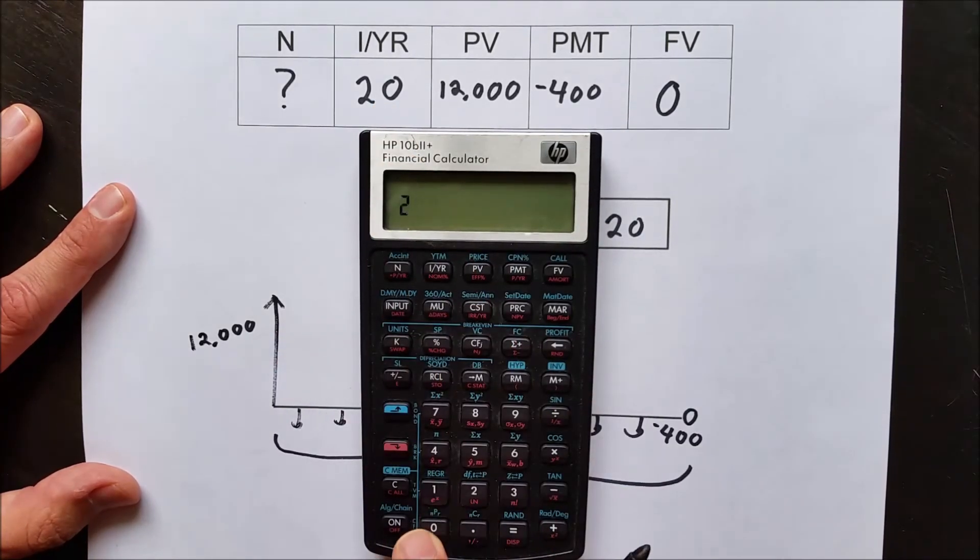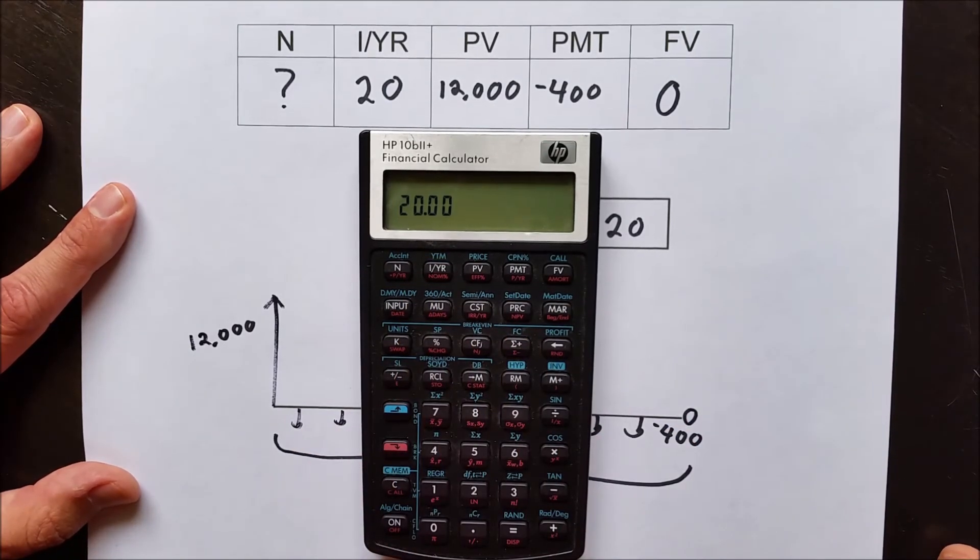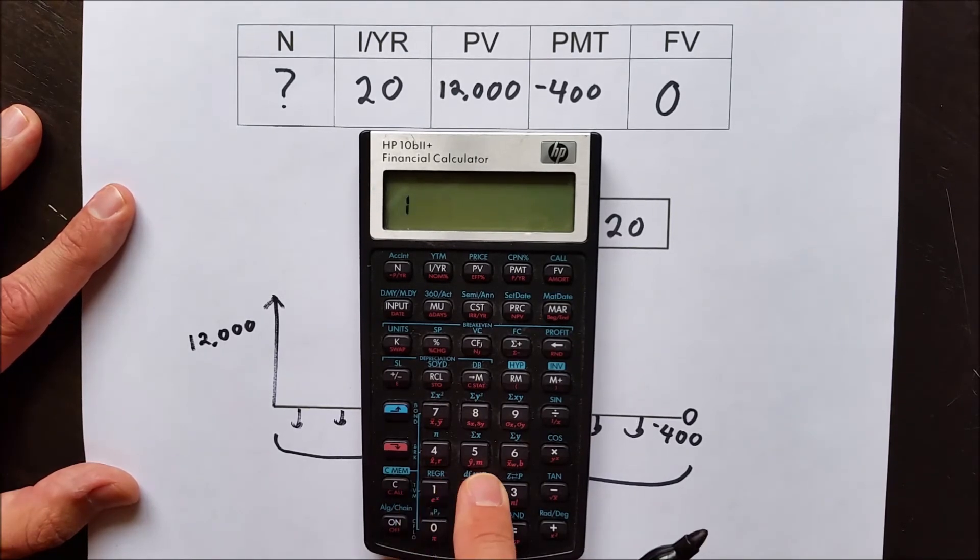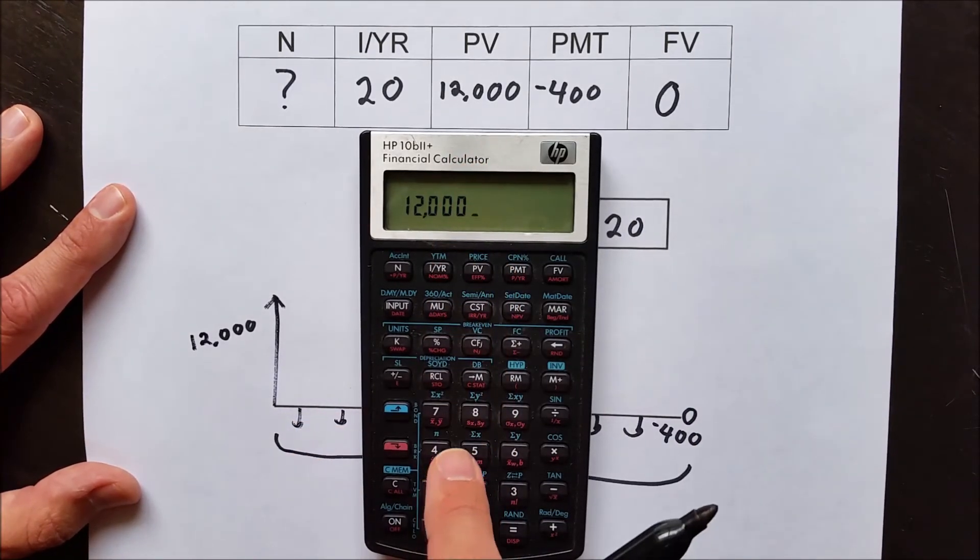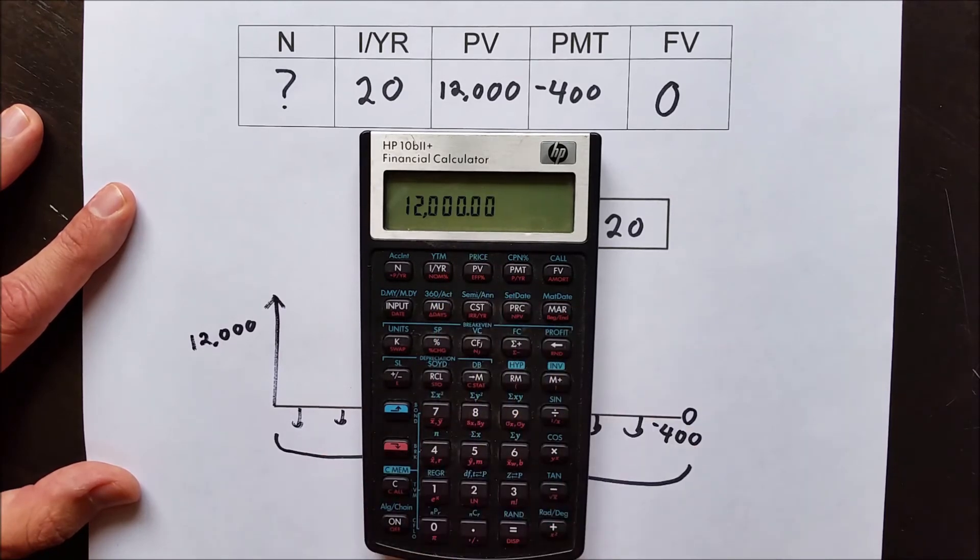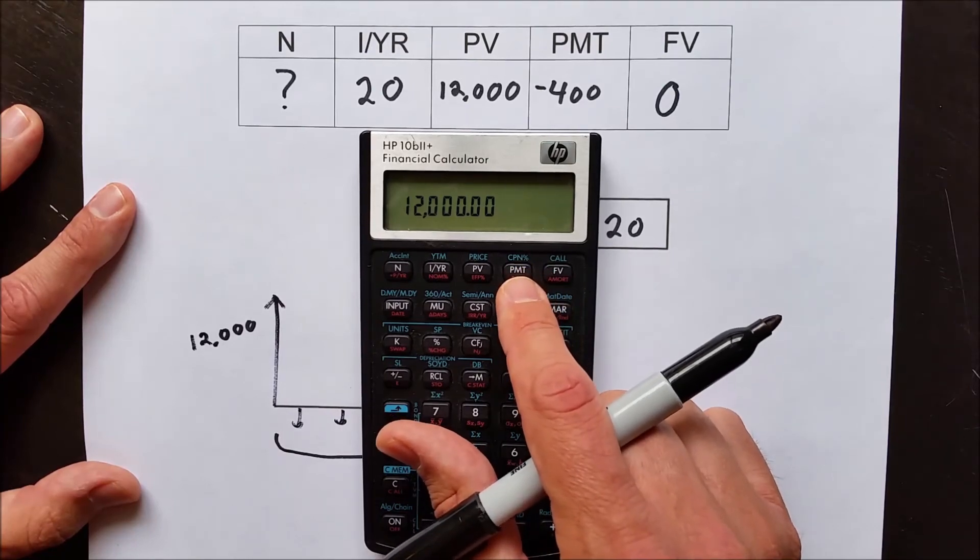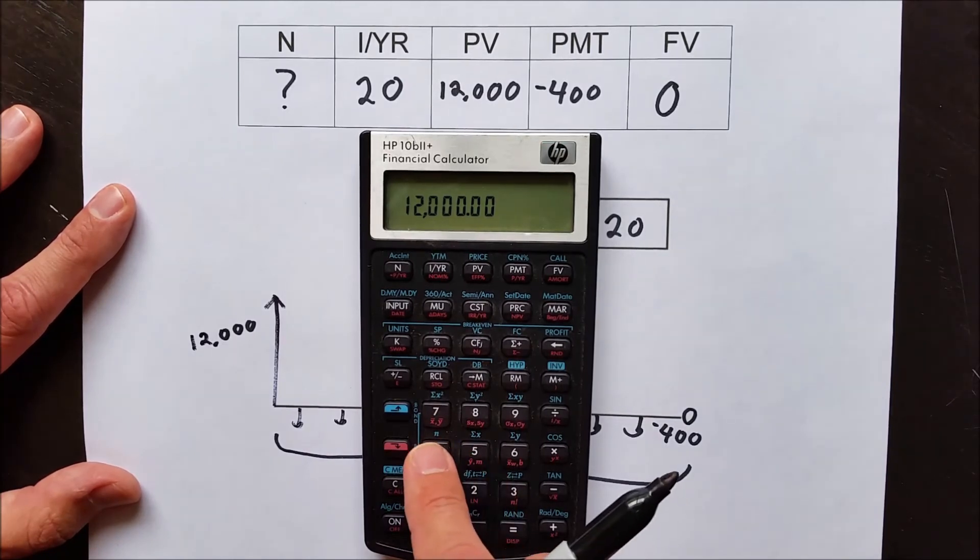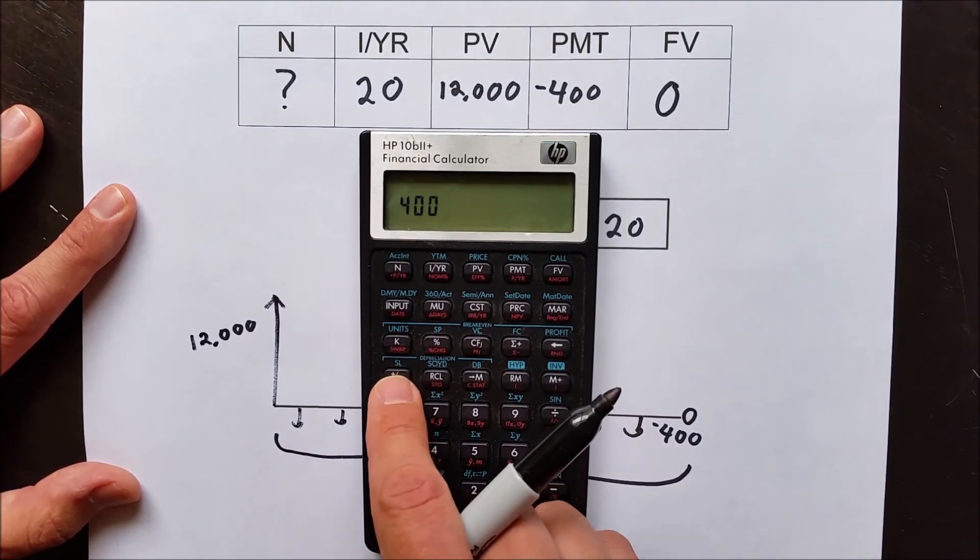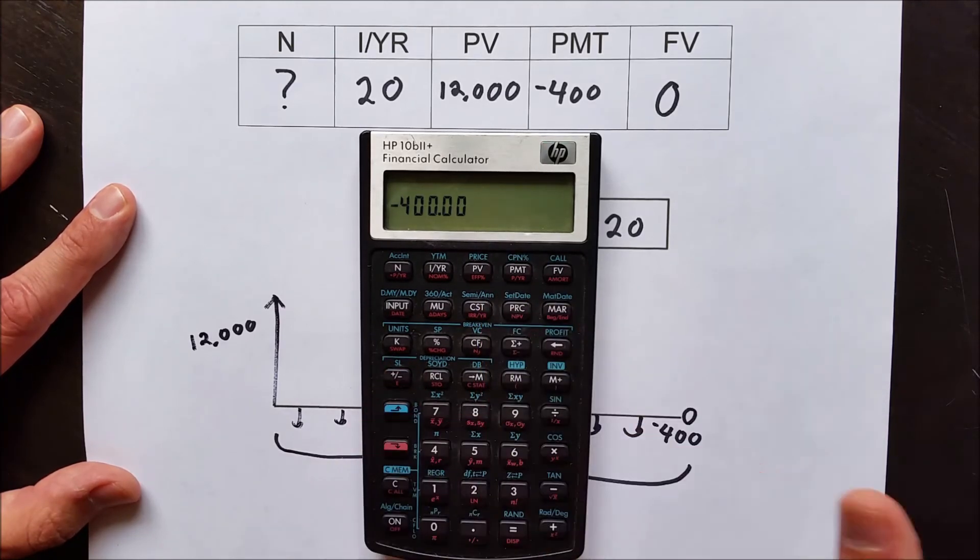IYR, interest rate is 20, so we put 20 here. PV is present value. That's a one-time event that happens today and today only, and it's a positive. Right now, Tom owes $12,000. We're just going to hit PV, and now it's entered in the present value. PMT are payments, the monthly payments. We know it's 400 negative because Tom is making monthly payments of $400 to pay off this debt. So we put 400, and then to get negative on the calculator, we hit this plus-minus toggle.